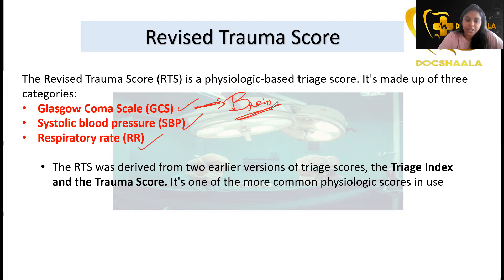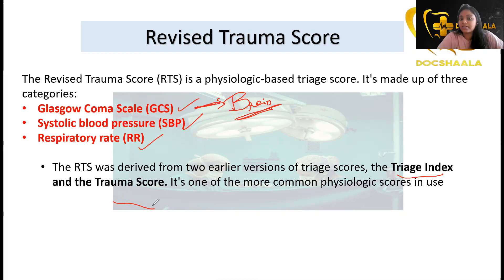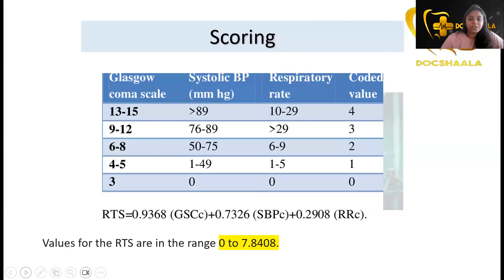It was derived from two earlier versions of triage scores — the Triage Index and the Trauma Score. The combination of these is the Revised Trauma Score, and it is the most commonly used physiologic score nowadays.